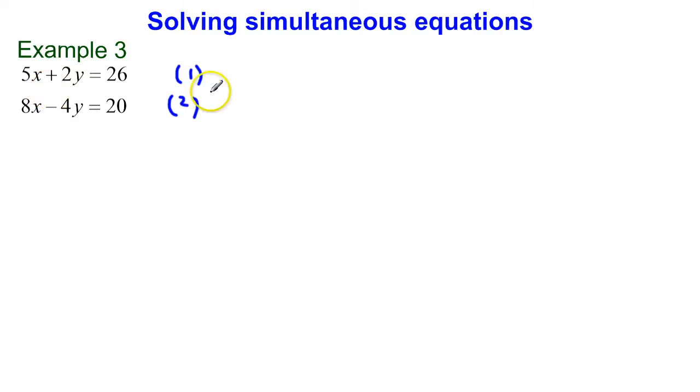If I now multiply equation 1 by 2, that's going to make this 10x plus 4y is equal to 52.